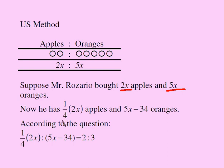Now he gave away 3 fourths of this many apples. So he was left with 1 fourth of 2x apples. This is what he was left with. He was left with this. He gave away 34 oranges. He originally had 5x oranges so he was left with this.